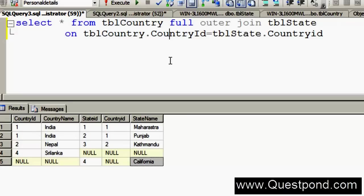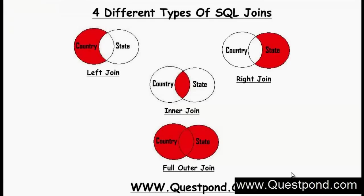Let us now revise what we have learned. Inner Join displays only the matching records from both tables — any unmatched records are not displayed. Left Join displays all records from the left table and only matching records from the right table. Right Join is the vice versa: all records from the right table and only matching records from the left table. Full Outer Join is a combination of all these joins — it displays both matching and non-matching records. Hope you enjoyed this session covering Inner Join, Left Join, Right Join, and Full Outer Join.